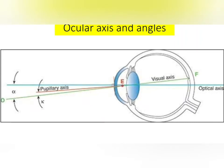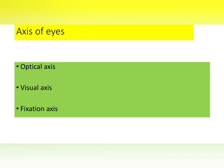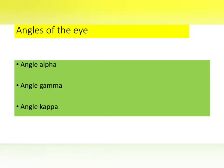Hello friends, welcome to my new video. Today I am going to discuss a very important topic that as an optometrist we all should know — that is about ocular axes and angles. We should have a proper idea about different types of ocular axes and the angles made by these axes to each other. There are three types of ocular axes: optical axis, visual axis, and fixation axis. There are also three types of angles: angle alpha, angle gamma, and angle kappa.